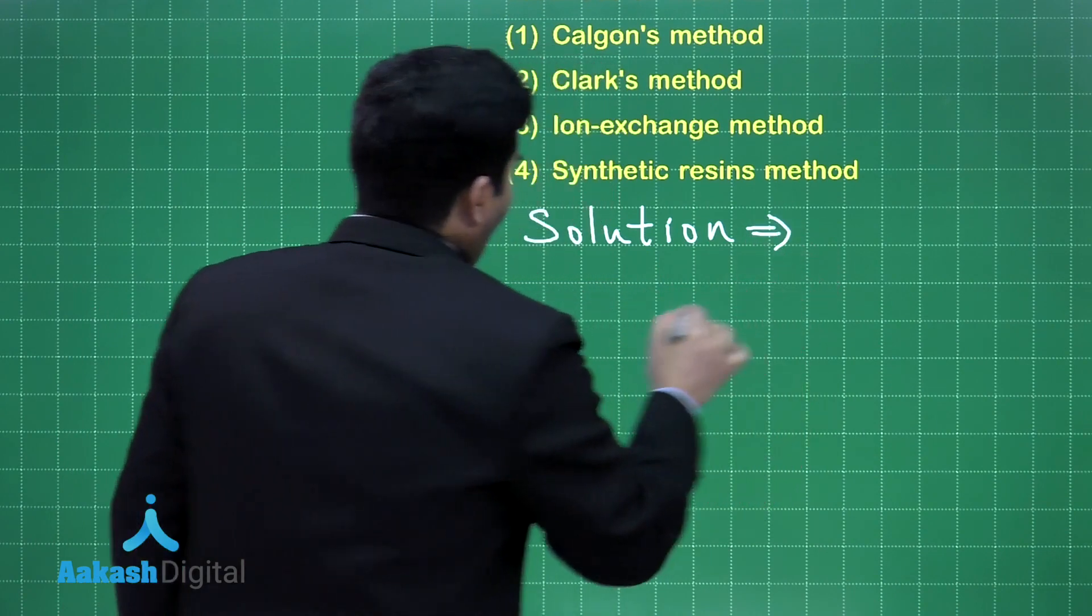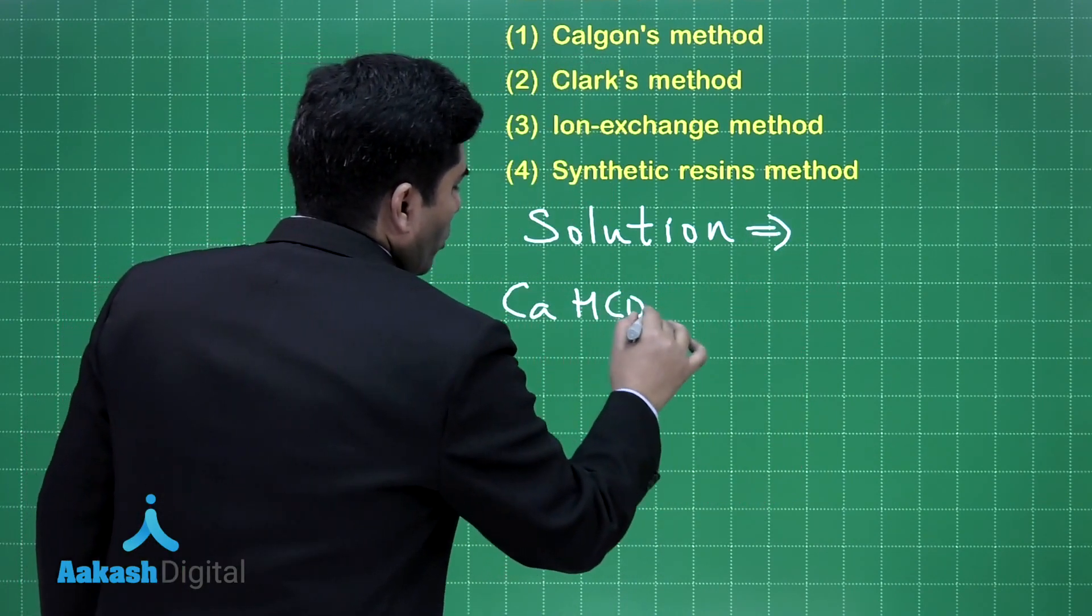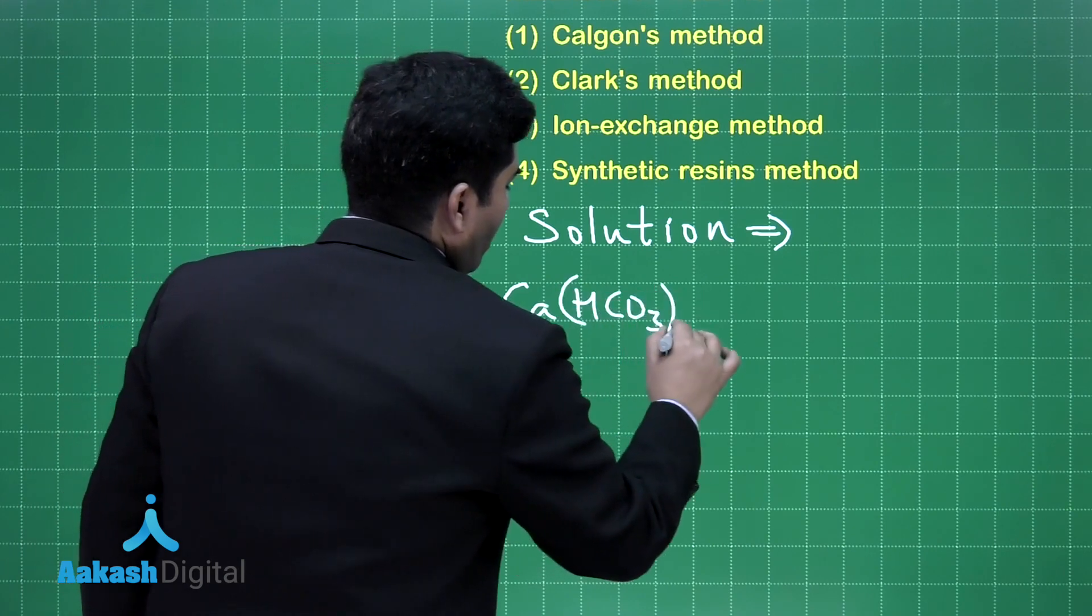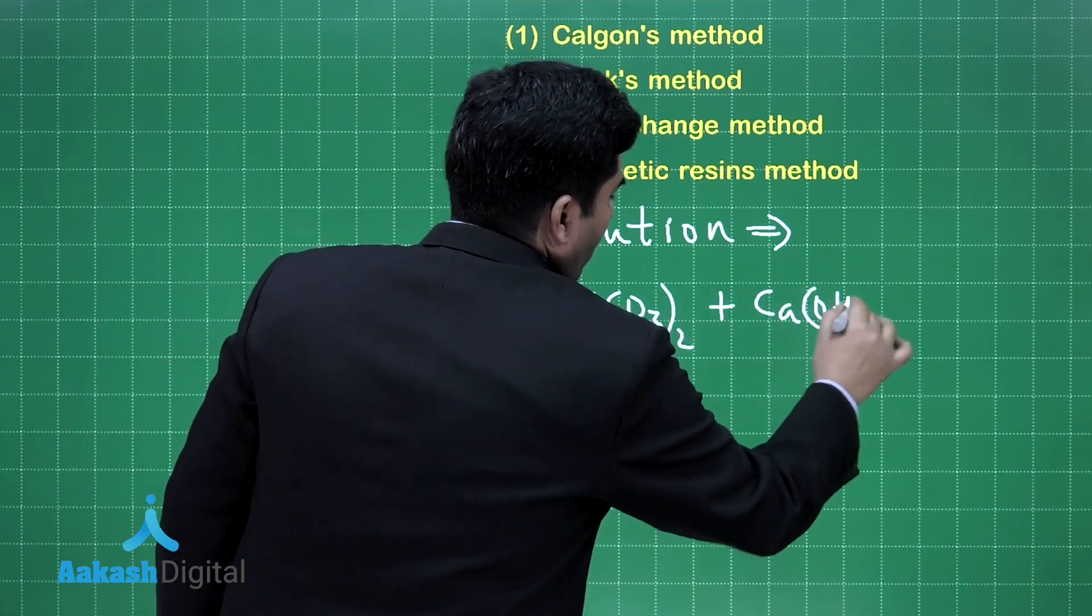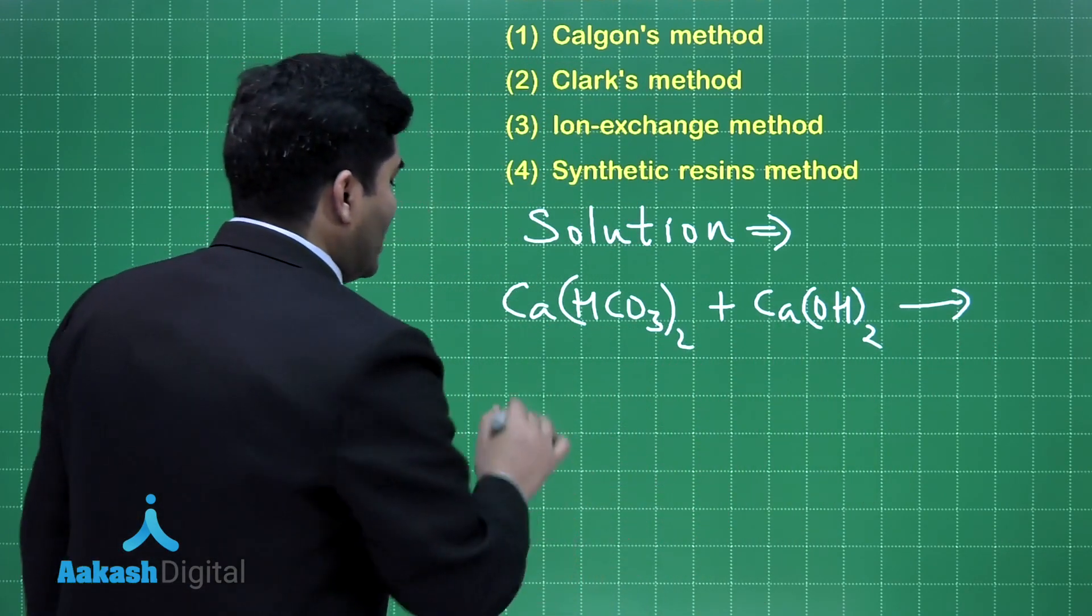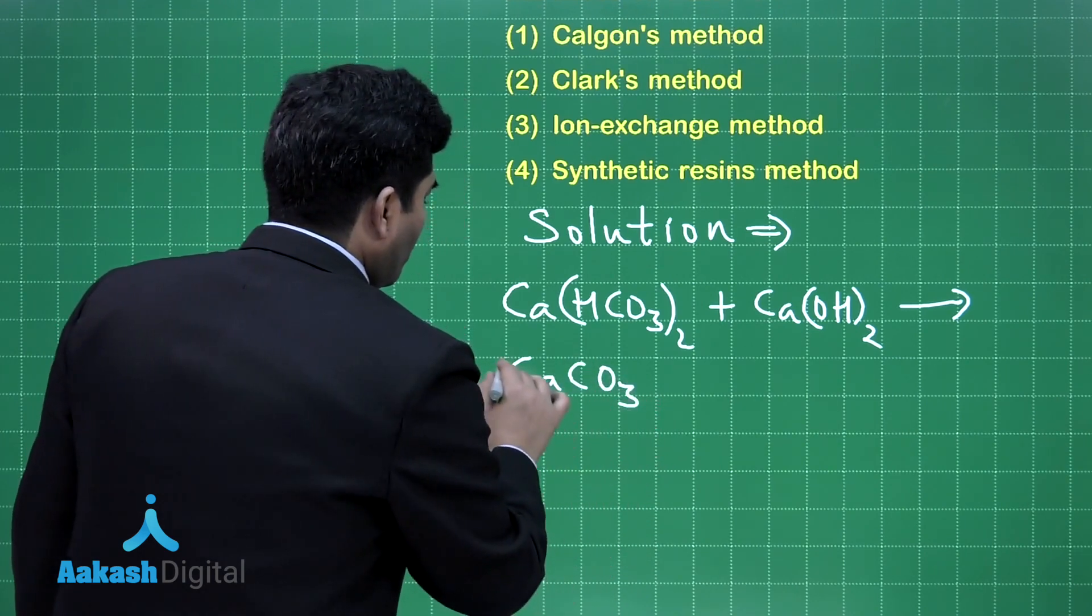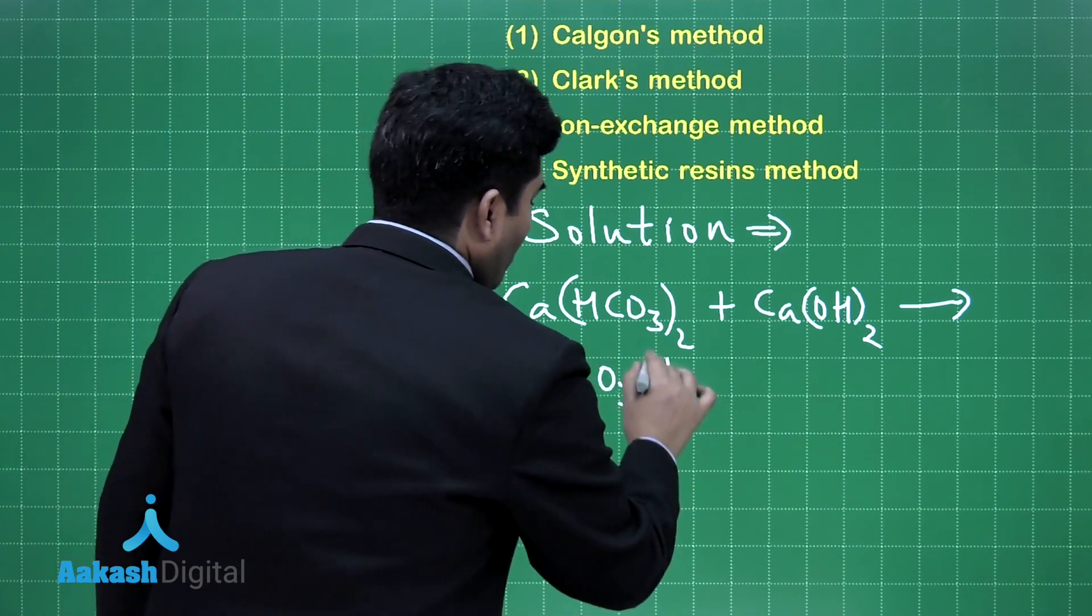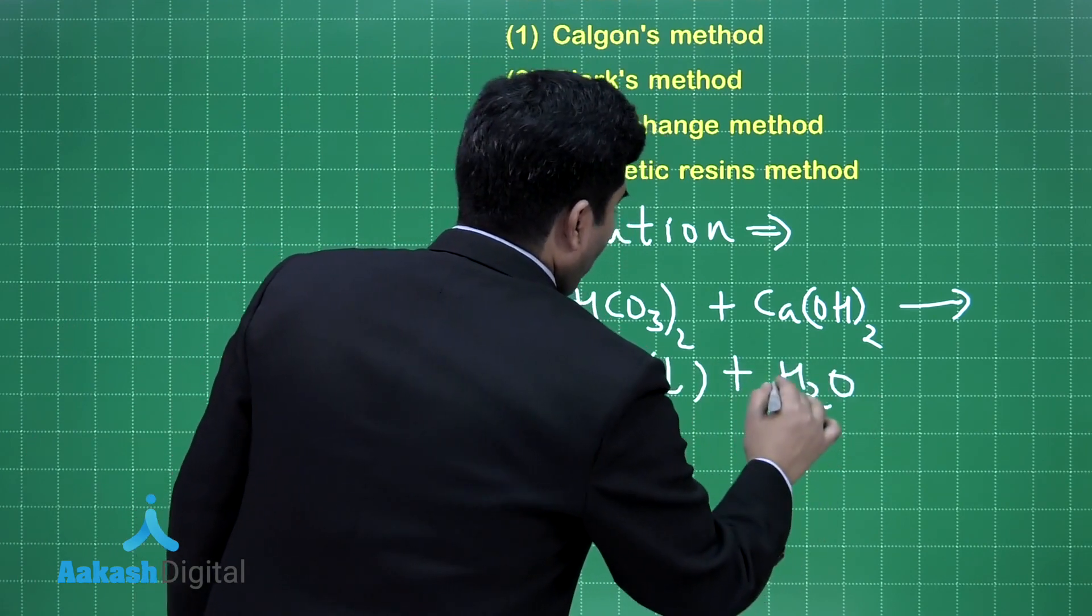The reason of the temporary hardness is calcium and magnesium bicarbonates. So, this is the bicarbonate of calcium and when we add calcium hydroxide to it, it gives us a precipitate of calcium carbonate. This is the precipitate plus water.